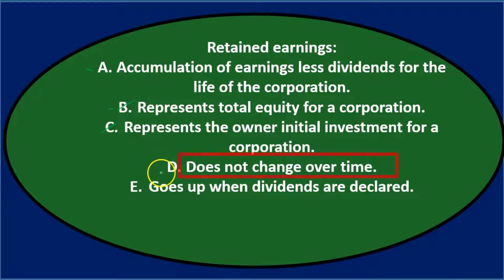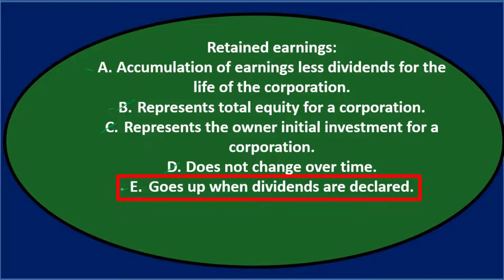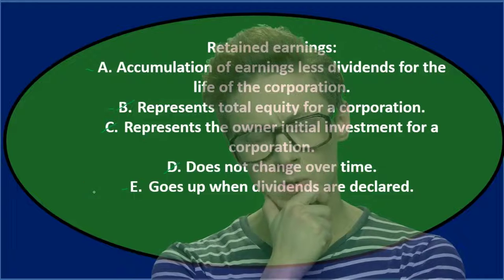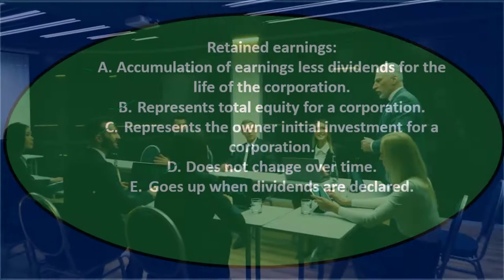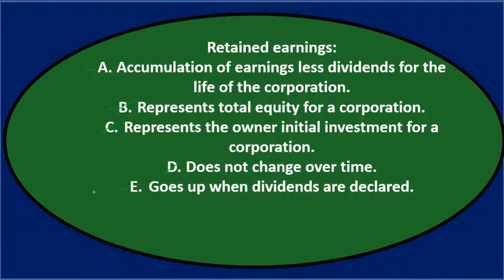E says goes up when dividends are declared. Retained earnings does something when dividends happen, but it would go down, not up, because it represents the earnings of the corporation and when we give a dividend it would decrease. So it's not E, and we're left with A.